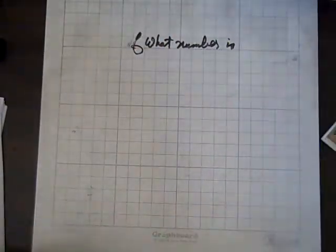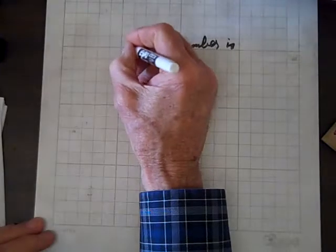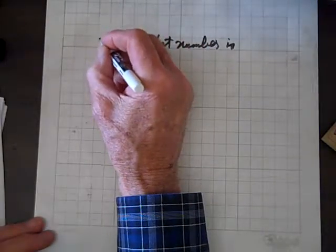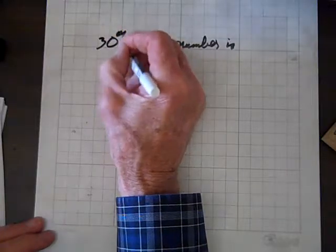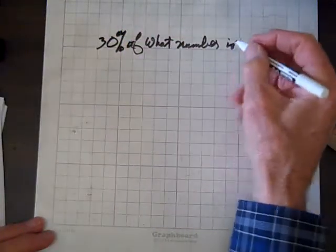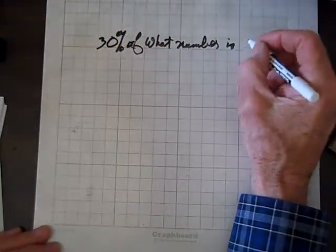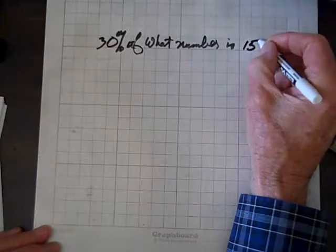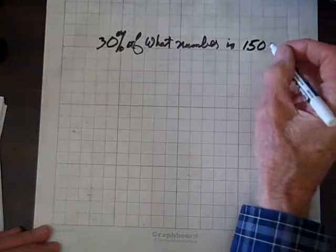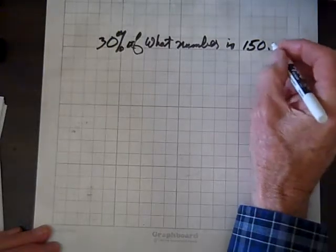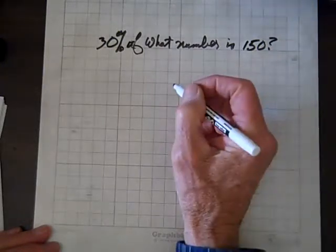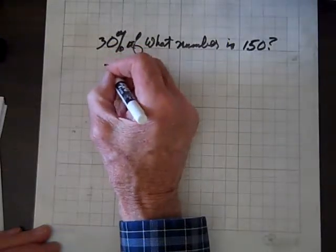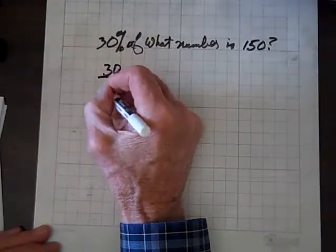Okay, we'll change the percent. Let's say we, I need an of here. So let's make it 30% of what number is, I don't know, let's make it 100, for example. Or 150, that's nice. 150. Question mark. So, first task, get rid of the percent symbol. So we'll write that as 30 over 100,